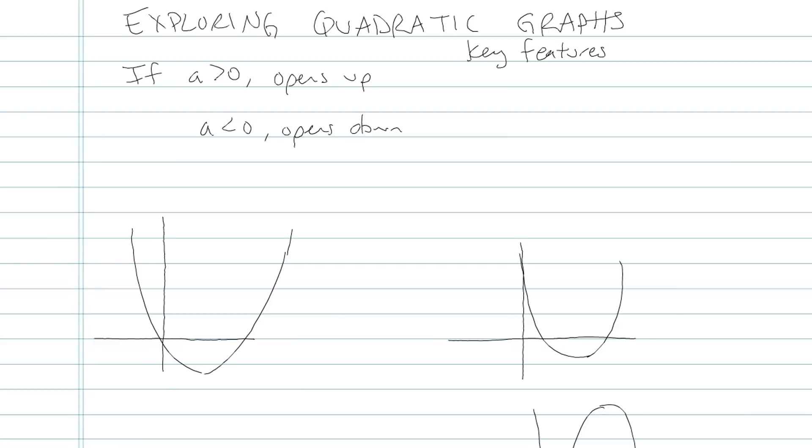First thing, looking at your leading coefficient. If your leading coefficient number a is greater than 0, then your parabola opens up like this. If your leading coefficient is less than 0 or negative, that means it opens down.